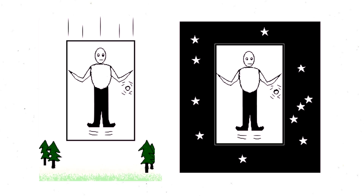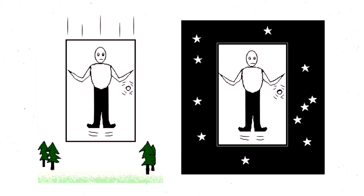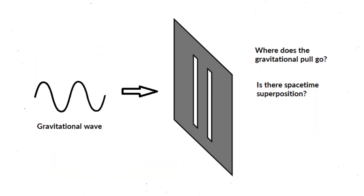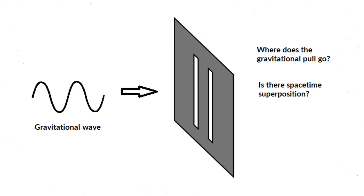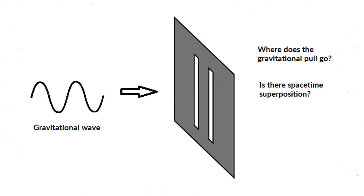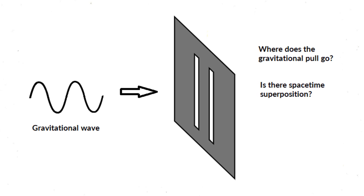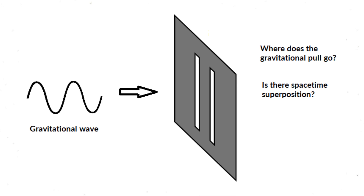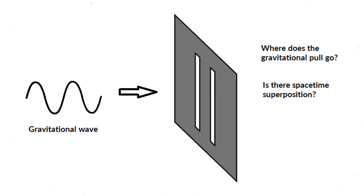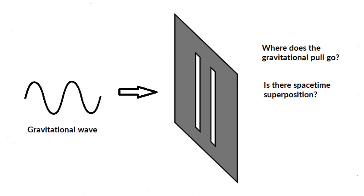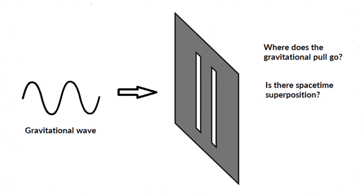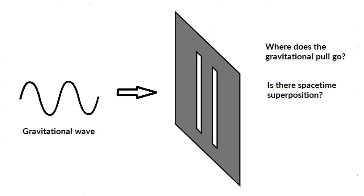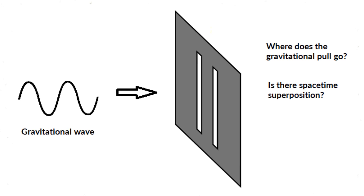Today, the thought experiment of the spacetime curvature, or a gravitational wave passing through the double slit experiment regarding quantum superposition, is considered the main thought experiment of quantum gravity.